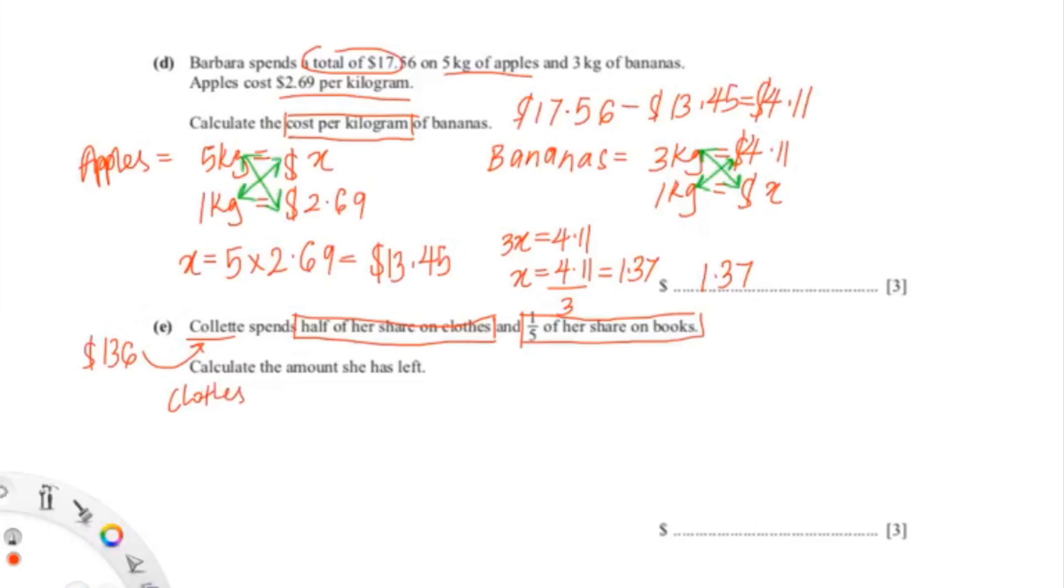So her clothes would be 136 times 1/2, or 136 divided by 2, which gives you 68. And her books would be 136 times 1/5, which is 27.2. Because the question is asking for the amount she has left, you take her total minus her spending: 136 minus 68 minus 27.2, which gives you an answer of $40.8.